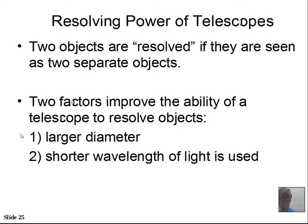There's a limit on how this proceeds because our atmospheric twinkling — called 'seeing' officially — limits the resolving capabilities. In general, a larger diameter is able to see objects very close together in the sky more easily. The second way to improve resolving is to use a shorter wavelength of light, which enables better details to be seen. Longer wavelengths smear out details a bit. To improve your ability to see details, get a larger diameter telescope and perhaps use a blue filter.